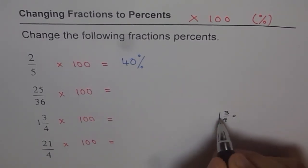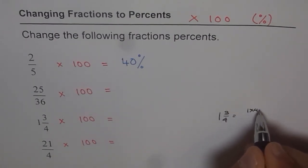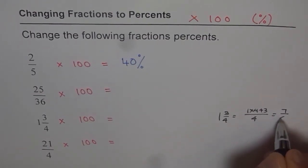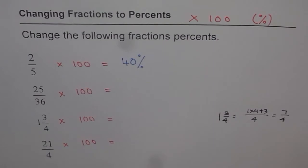1 and 3 by 4 means you multiply 1 by 4 and add 3. That means 1 times 4 plus 3 gets in the numerator, divided by 4, which is 7. So you get 7 over 4. So here 1 and 3 by 4 is same as 7 over 4. You can multiply 7 over 4 with 100, get your answer.